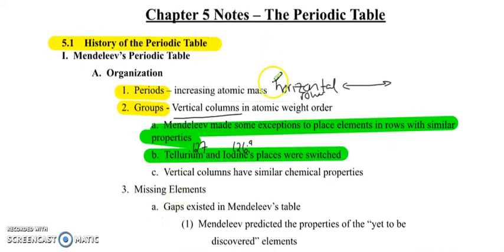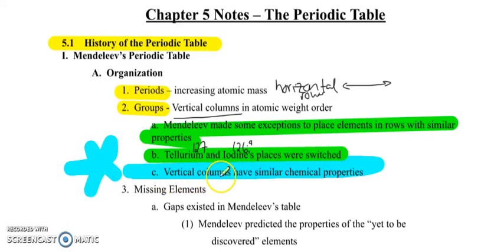Other key point that we need to know is that vertical columns have similar chemical properties. That is a really key fact here. What he actually was discovering was that vertical columns have the same number of valence electrons. He didn't even know about electrons yet. Thompson hadn't done his famous cathode ray tube experiment, but he was picking up on those chemical properties, which are influenced by the valence electrons.